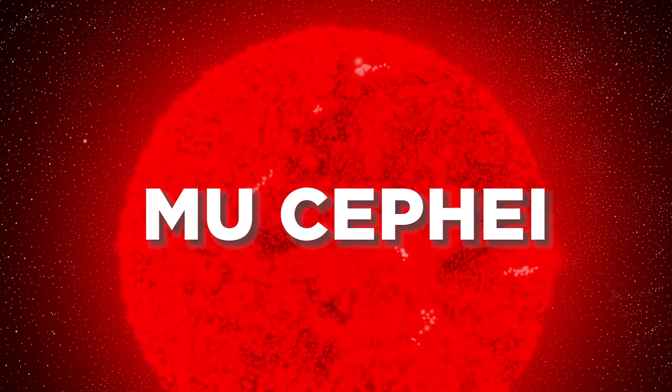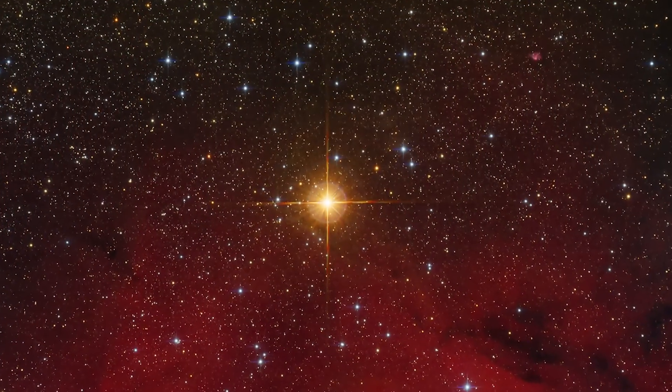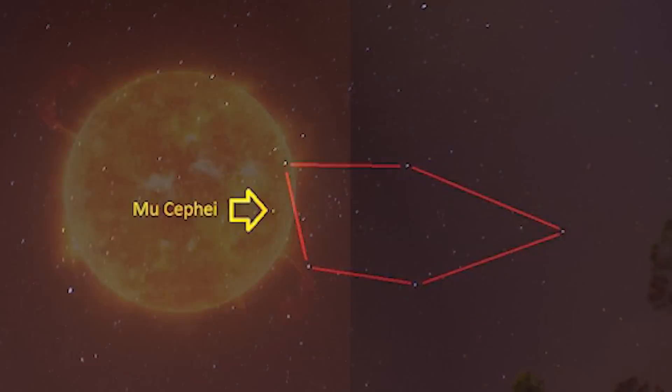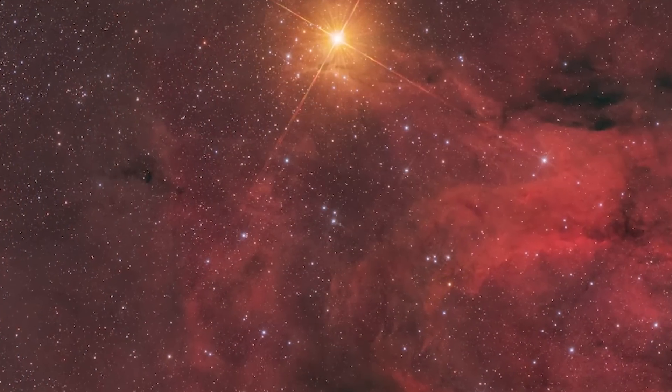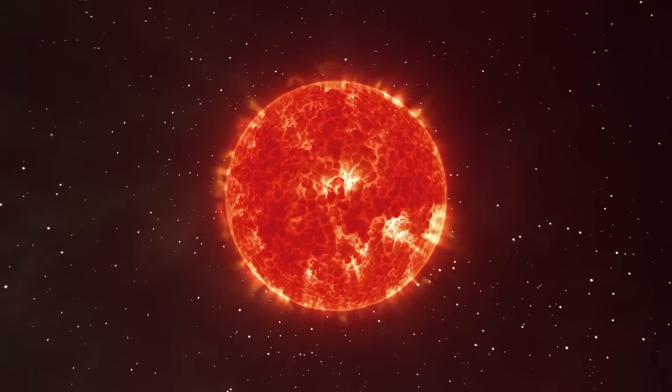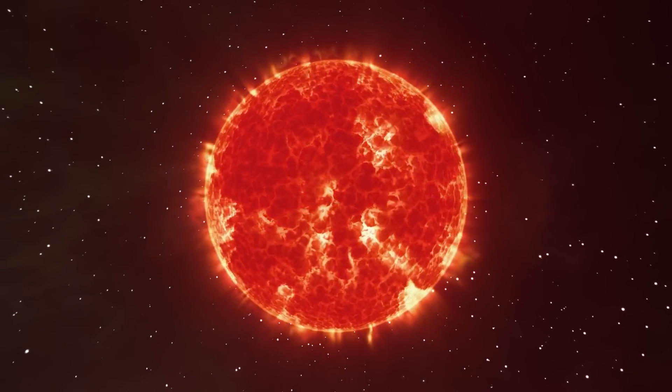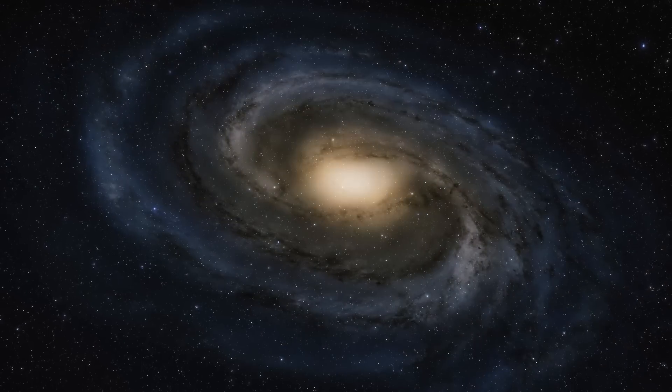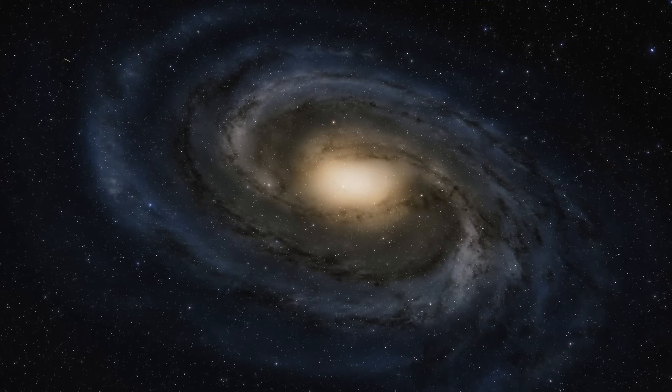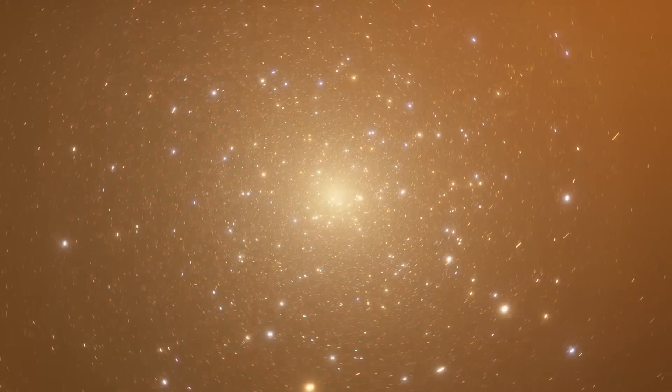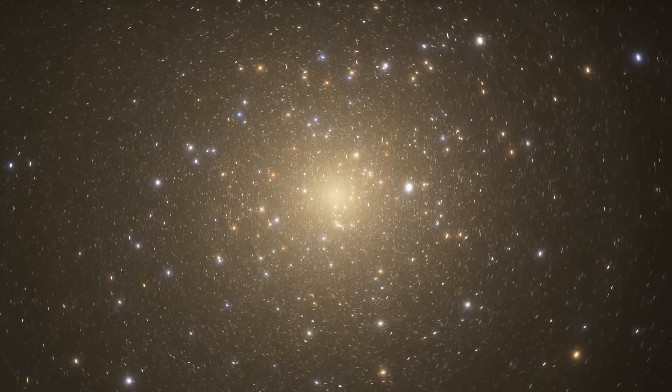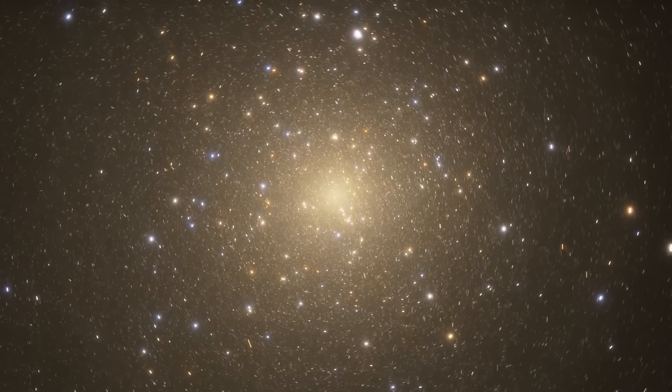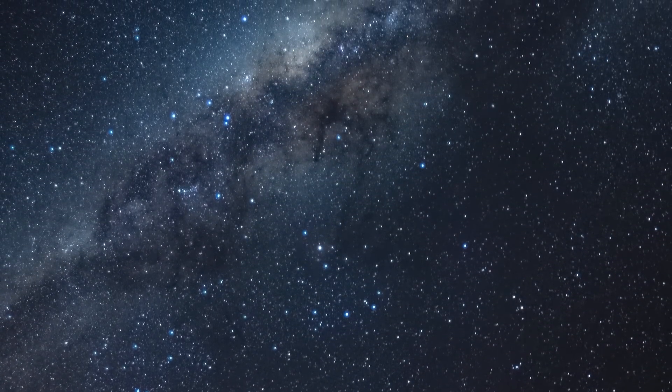People often say that Mucefei, also called the Garnet Star and found in the constellation Cepheus, looks a lot like Betelgeuse. With a radius about 1650 times bigger than the sun, Mucefei is one of the biggest stars we know of. Mucefei is a variable star, just like Betelgeuse and Antares. It is also one of the largest red supergiants in the Milky Way. Even though Betelgeuse is different, all of these stars are interesting in their own ways. Some things that make each star unique are its properties and traits. It's interesting to learn about all of them and see how they vary.